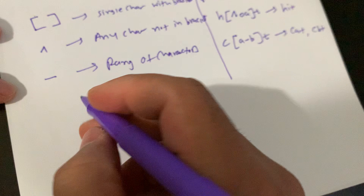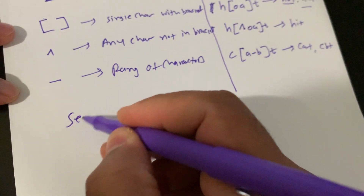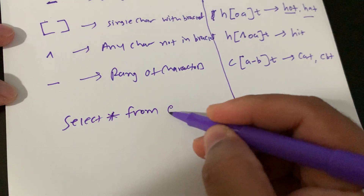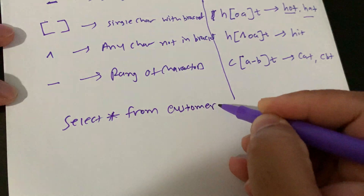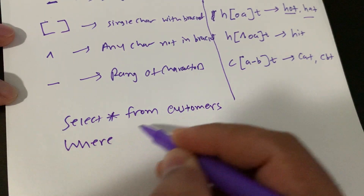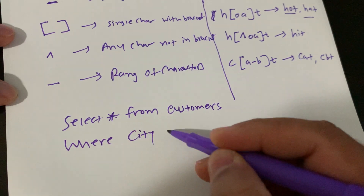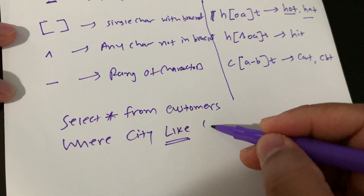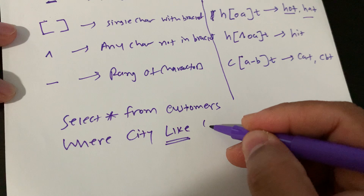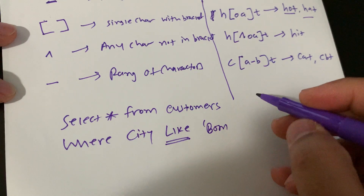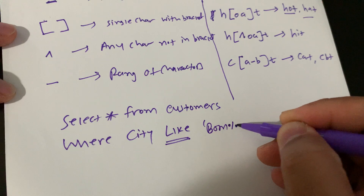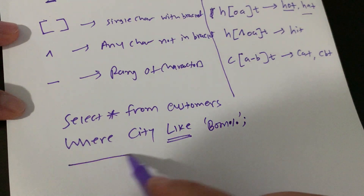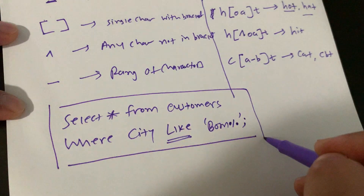Now let's look at the syntax for using wildcards. For example: SELECT * FROM customer WHERE city LIKE 'Bombay%'. You need to use the LIKE keyword for wildcard patterns, and then append your wildcard symbol at the appropriate position in the string.